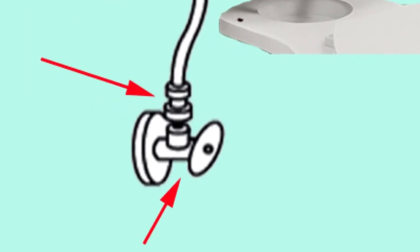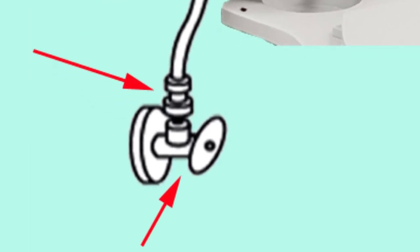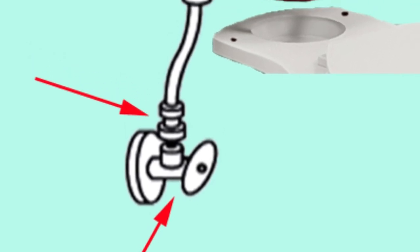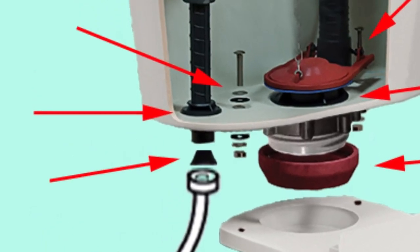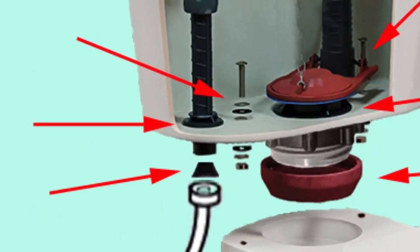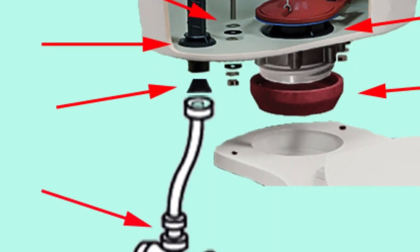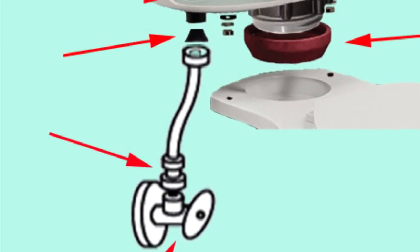The supply valve has seals that can fail and cause a leak. The connection between the supply valve and fill valve, be it a flexible or a copper pipe, also must have flat or cone-shaped rubber seals in its nuts, so they are a possible leak source at the supply valve end or at the fill valve end.